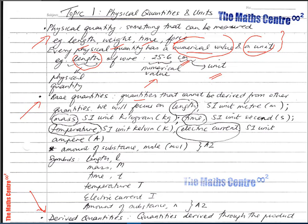We will focus on five base quantities: length, mass, time, temperature, and electric current. When you cover A2, you will have another base quantity — the amount of substance, which we call the mole. More about that next time.